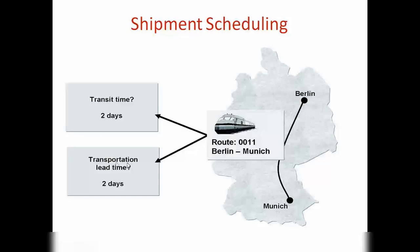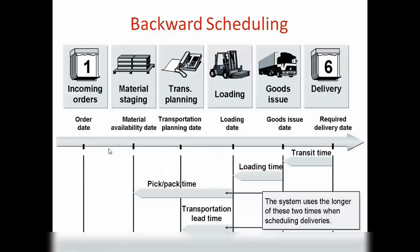We also have transportation lead time. Transportation lead time is when materials are ready in the plant but we need to do all internal activities like picking, packing, and preparing all the paperwork. That's the transportation lead time. There are two types of scheduling: one is called backward scheduling and one is called forward scheduling.